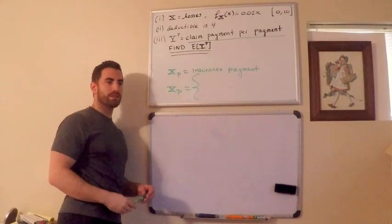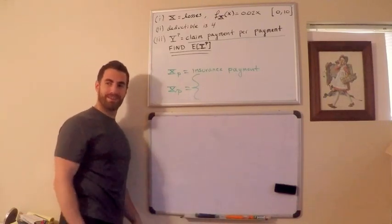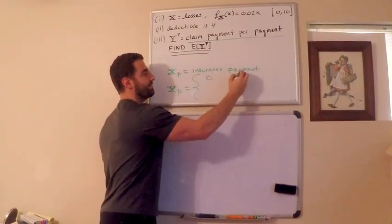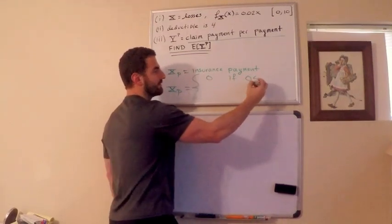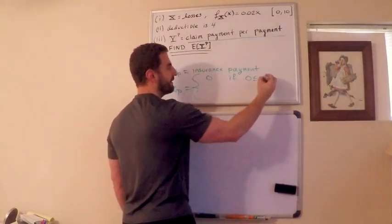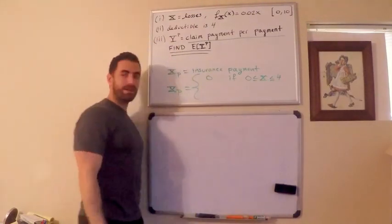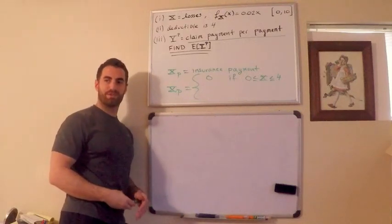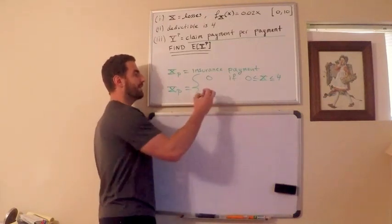The insurance payment is going to be zero. If I'm the insurance company, I pay nothing if the loss is zero or if the loss is all the way up to 4, I pay nothing. If you crash your car and you have a loss between 0 and 4, the insurance company pays nothing because the deductible is 4. You pay all of it out of pocket.